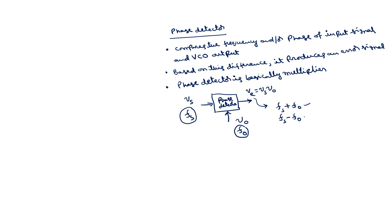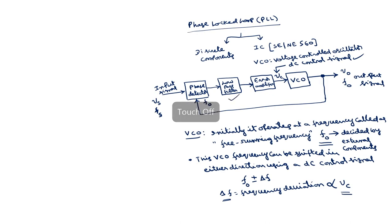Between these two components, Fs plus F0 is the high frequency and Fs minus F0 is the low frequency. The output of the phase detector is applied to the low pass filter, which filters the high frequency Fs plus F0 and passes the low frequency Fs minus F0. This Fs minus F0 will be amplified using the error amplifier, which generates a DC control signal that controls the frequency of the VCO. This is a closed loop operation, so F0 will be shifted in either direction depending on the DC control signal, which in turn depends on the difference of the frequencies. There are three stages of this Phase-Locked Loop.